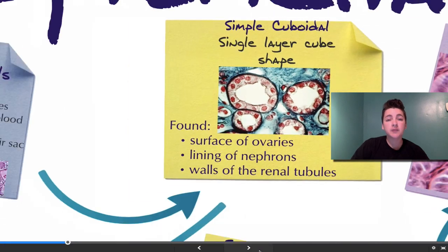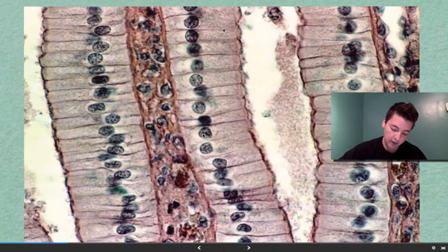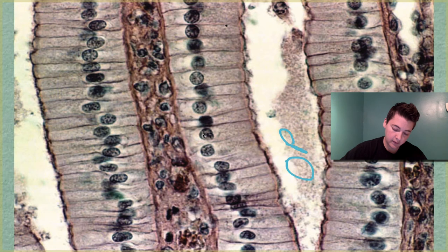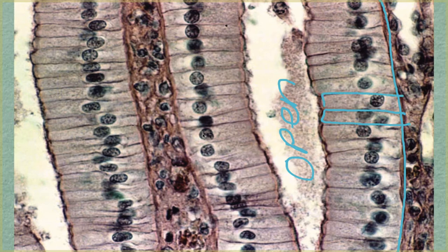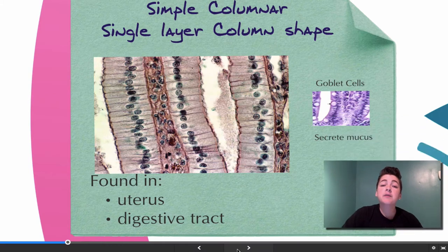Simple columnar — simple meaning one layer, and columnar meaning column shape. Finding our open space and basement membrane, we have one layer of column-shaped cells. Simple columnar is found in the uterus as well as the digestive tract.